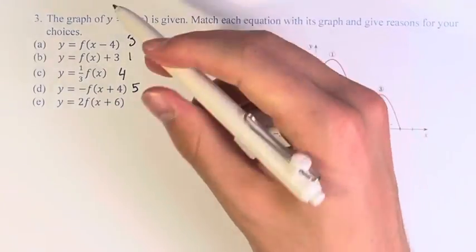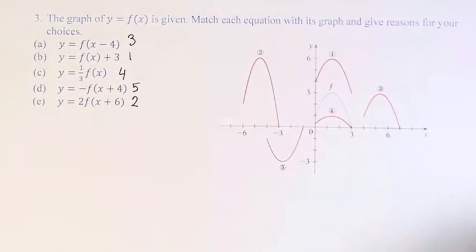And then we have 1, 3, 4, and 5, so we know 2 must be the final answer. So we're vertically stretched by 2 and moved to the left 6. See you next time.